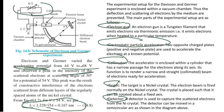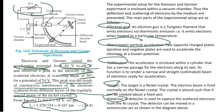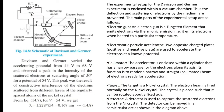The intensity of the electron peaks at 50 degrees at 54 V, with a voltage range of 54 V. This peak is the result of constructive interference of electrons, which scatter through different layers of the regularly spaced atoms of the nickel crystal. The experimental setup for the Davisson-Germer experiment is enclosed within a vacuum chamber. Inside the vacuum chamber, there is a deflection and galvanometer arrangement, along with a detector to measure scattering of electrons.